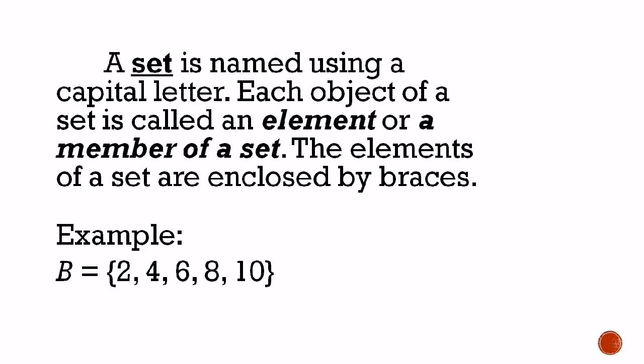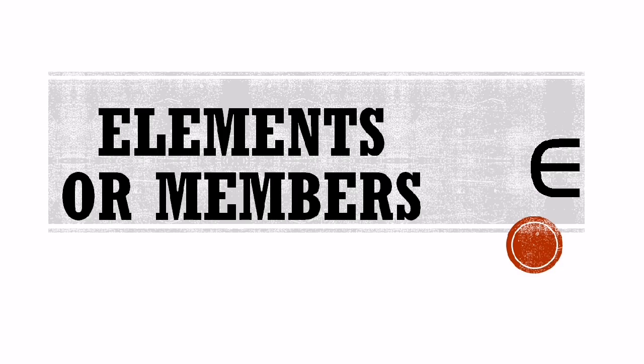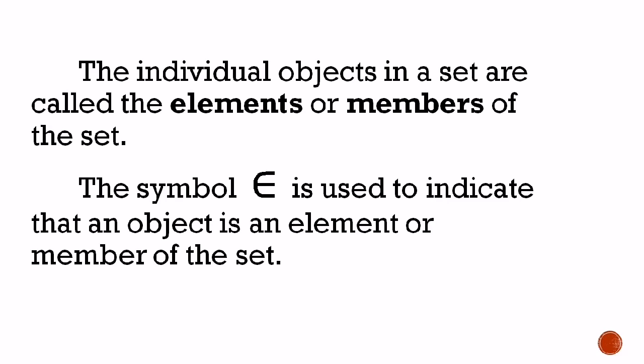A set is named using a capital letter. Each object of a set is called an element or a member of a set. The elements of a set are enclosed by braces. For example, set B, whose elements are 2, 4, 6, 8, and 10. What is inside the braces is called an element or member of a set. The symbol ∈ is used to indicate that an object is an element or member of the set.